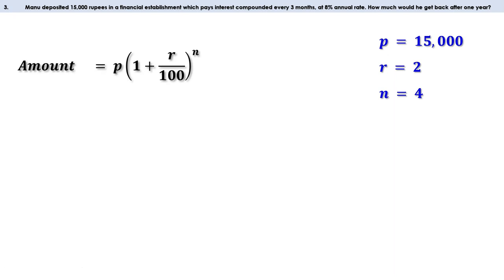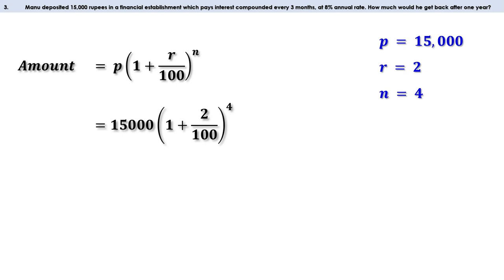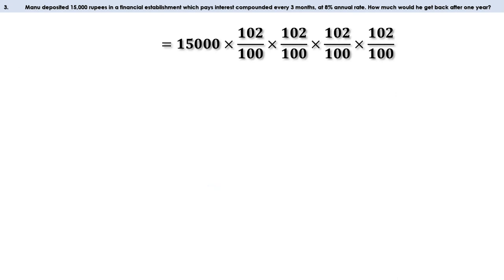The amount is P into (1 + R/100) raised to N. Replacing the values we get 15,000 into (1 + 2/100) raised to 4. Now 1 + 2/100 is 102/100. So this becomes 15,000 into (102/100) raised to 4, which equals 102/100 × 102/100 × 102/100 × 102/100. Let us cancel two zeros from numerator and denominator, and then one more zero.